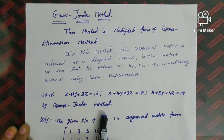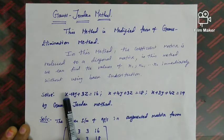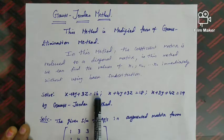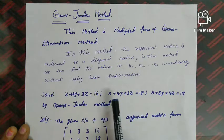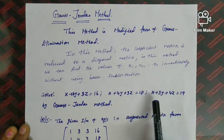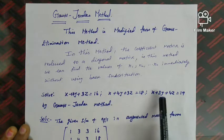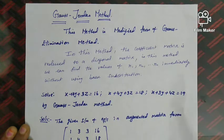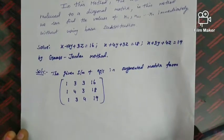The first step is to arrange the augmented matrix. From the first equation, the coefficients of x, y, z and the constant are 1, 3, 3, 16. The second equation gives 1, 4, 3, 18, and the last equation gives 1, 3, 4, 19. Using all the coefficients, we write the augmented matrix form.